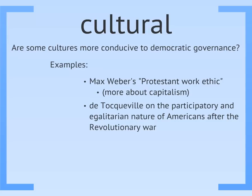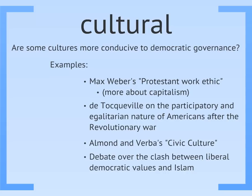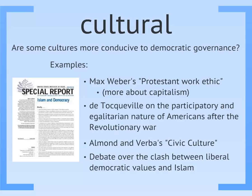De Tocqueville believed that American democratic government was successfully developing because of the culture of the former colonies, which he found to be particularly open to participation in forums like town halls or civic associations, as well as particularly egalitarian. The most influential modern example of a cultural argument is Gabriel Almond and Sidney Verba's civic culture theory. They argued that democracy requires a culture that is participatory but also moderate, so that citizens looked over their government's shoulders enough, but didn't get so involved as to keep it from governing at all. Finally, lots of people have studied whether the tenets of liberal democracy are compatible with Islam, though the argument that mainstream Islamic values are unsupportive of democracy is ungrounded when it comes to discussing the majority of Muslims.